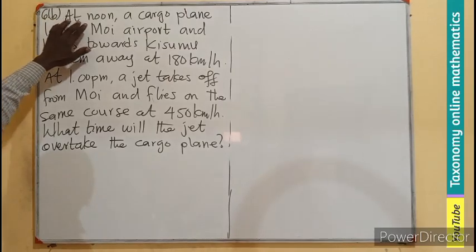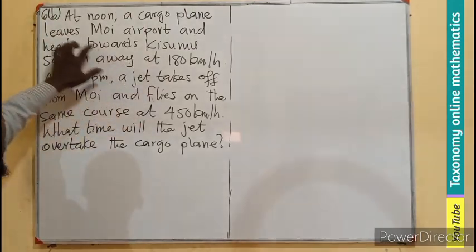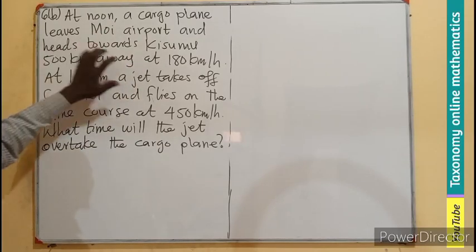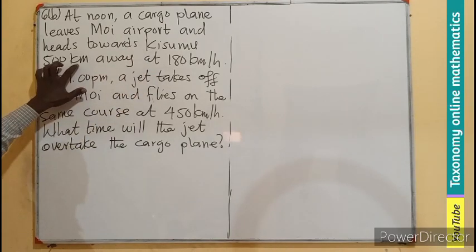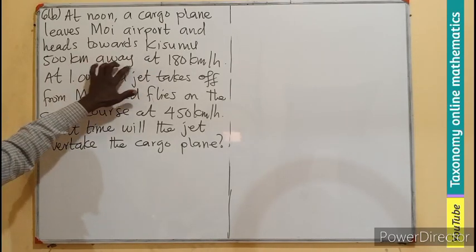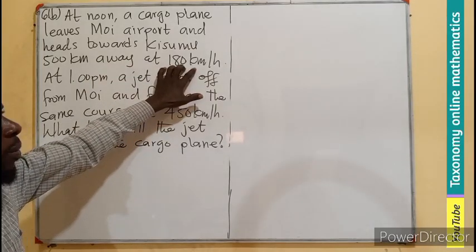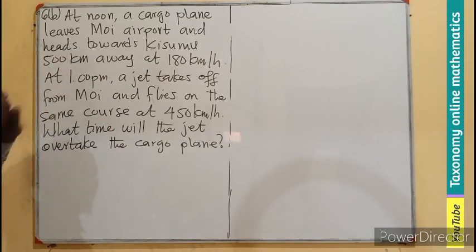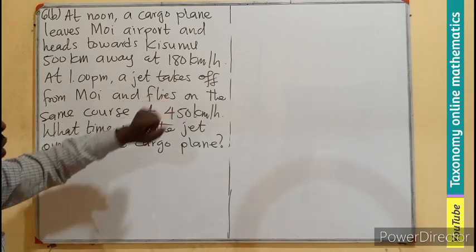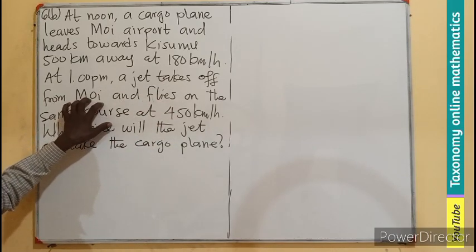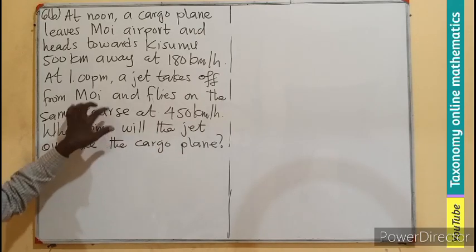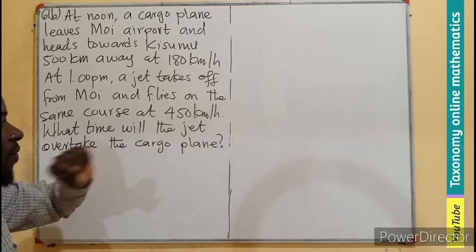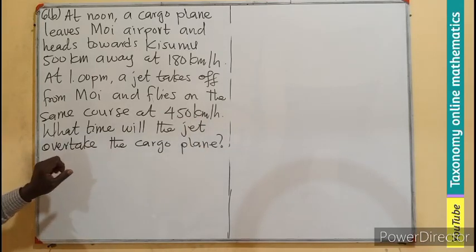Question B of the same question. At noon, a cargo plane leaves Moi airport and heads towards Kisumu, which is 500 kilometers away at a top speed of 180 kilometers per hour. Then at 1pm exactly, a jet takes off from the same town Moi and flies on the same course at a top speed of 450 kilometers per hour. So the question is, what time will the jet overtake the cargo plane?